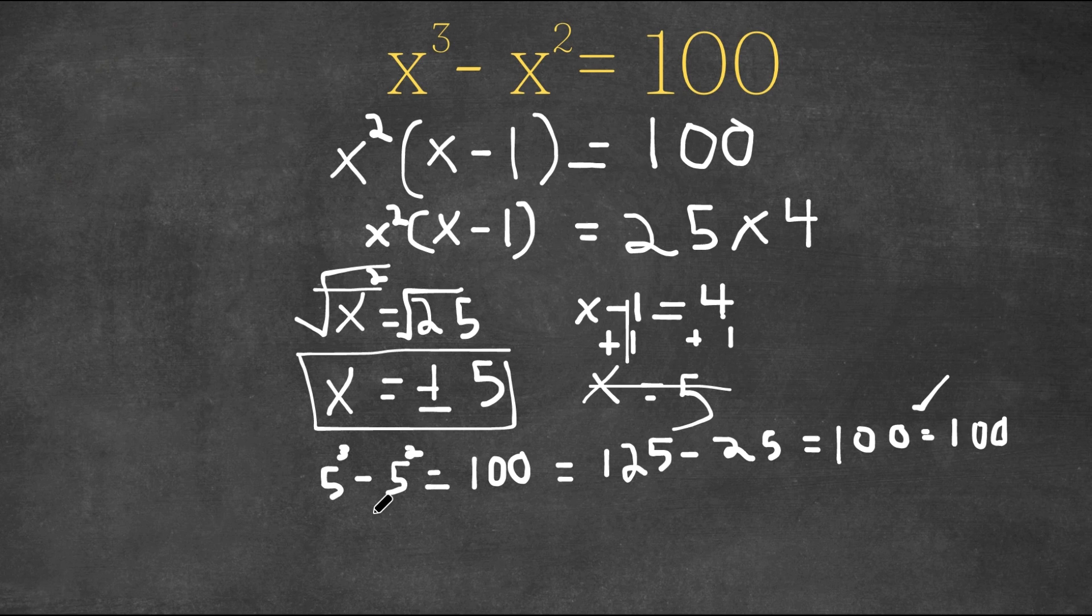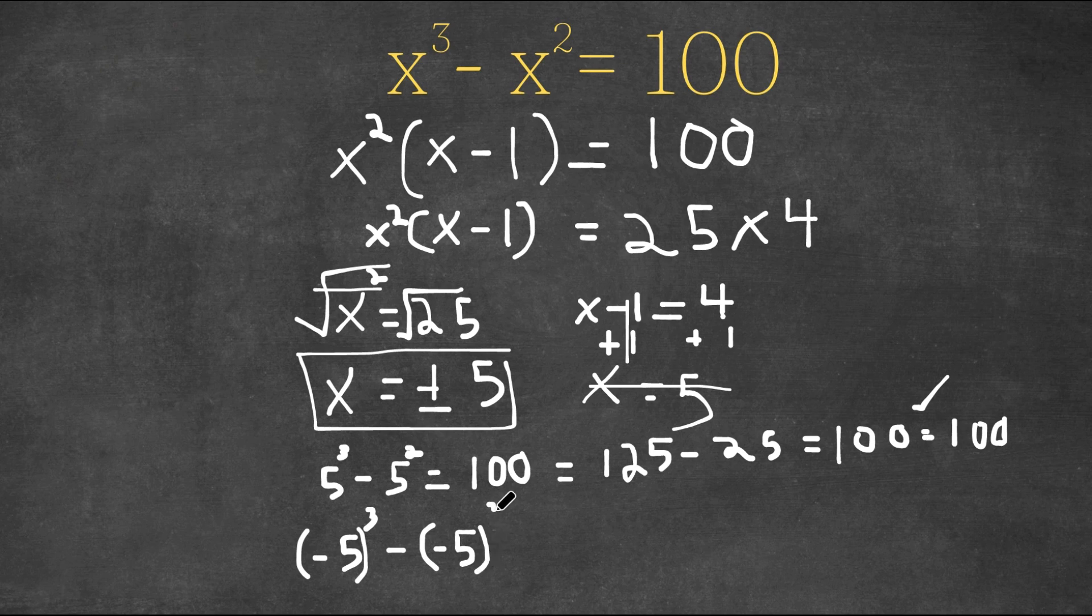Now, why don't we plug in negative 5? Plugging in negative 5, we would get negative 5 in parentheses to the power of 3 minus negative 5 to the power of 2 equals 100.